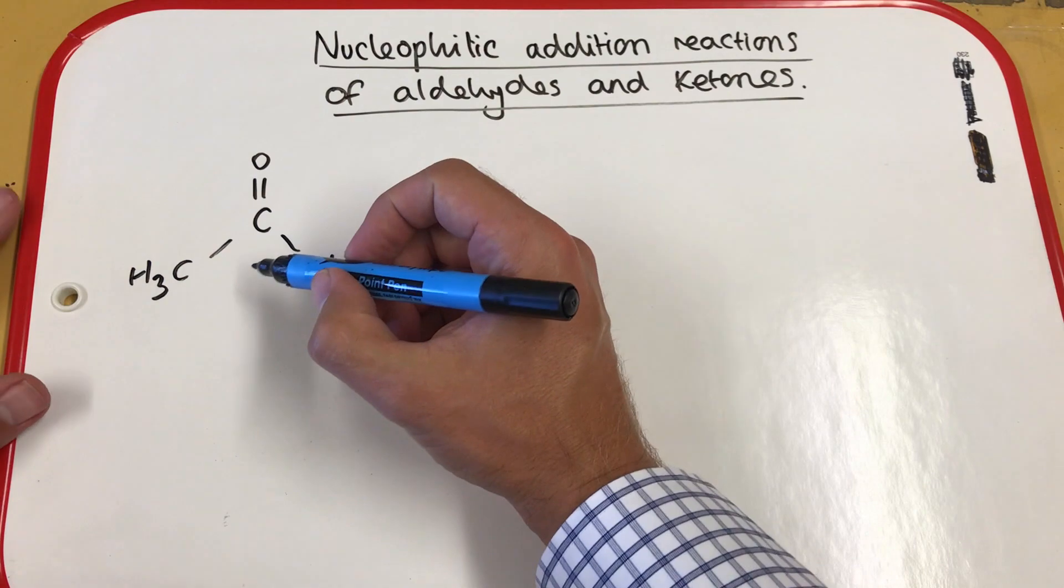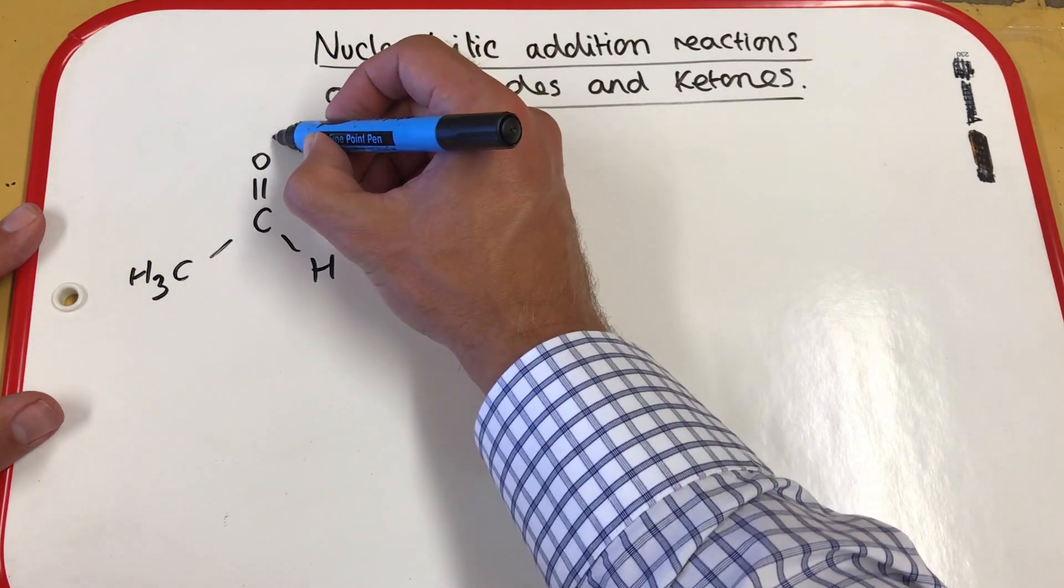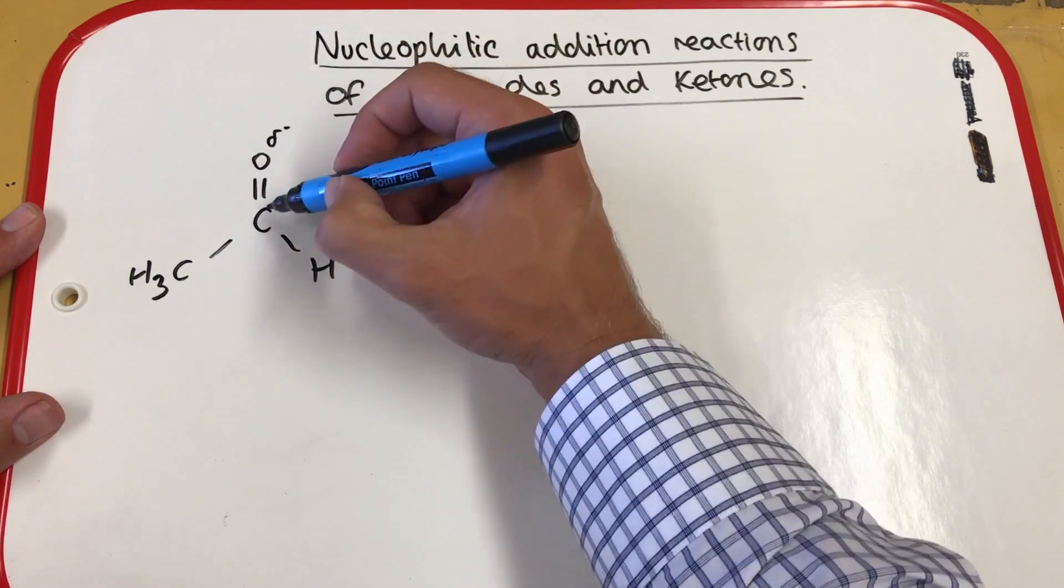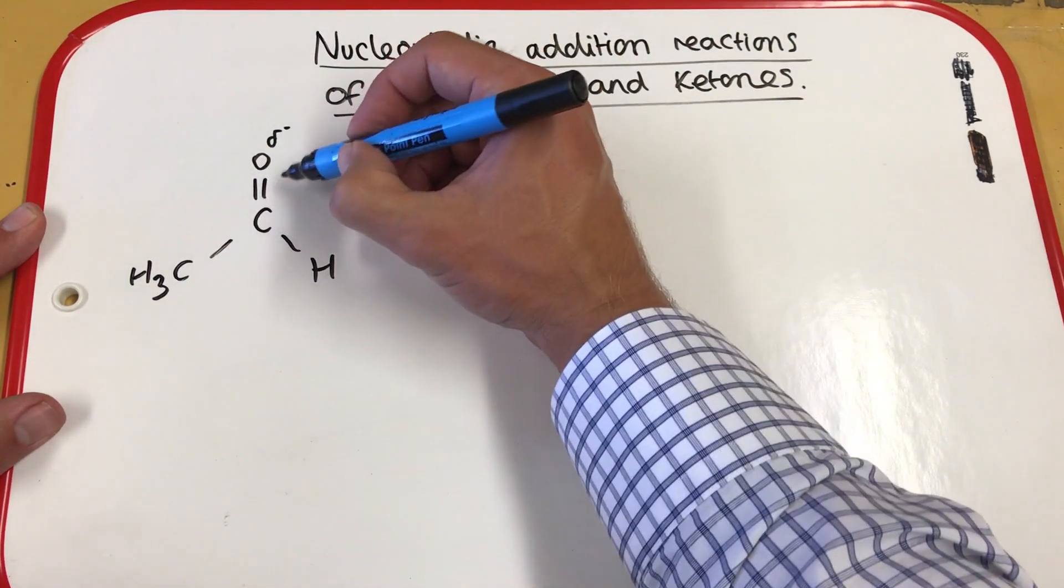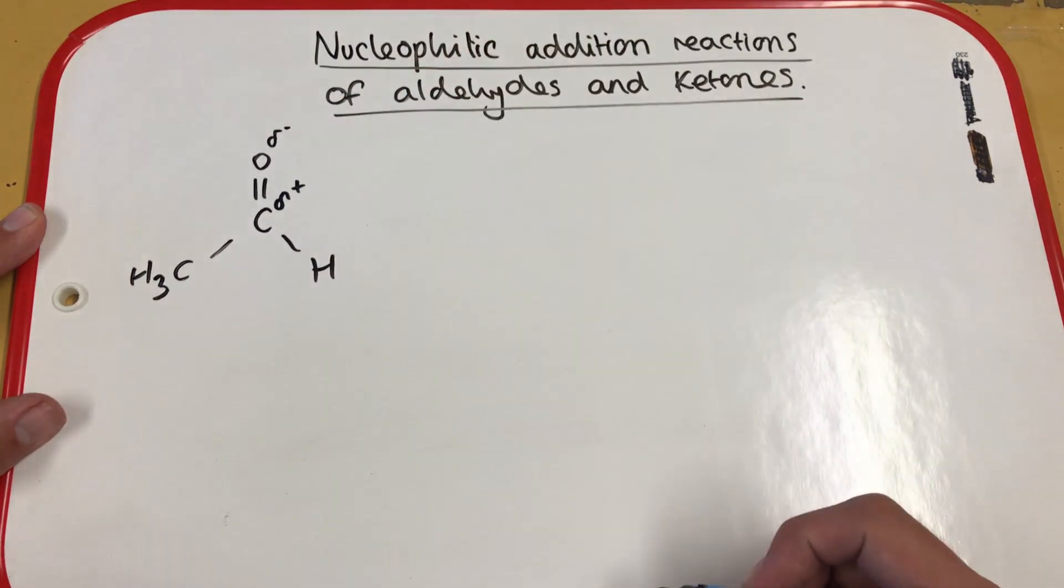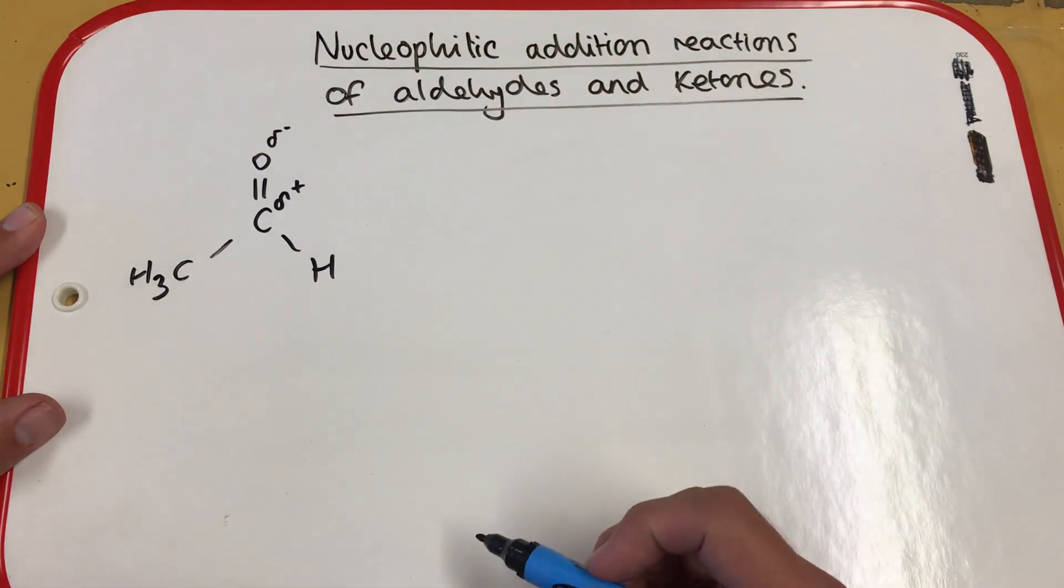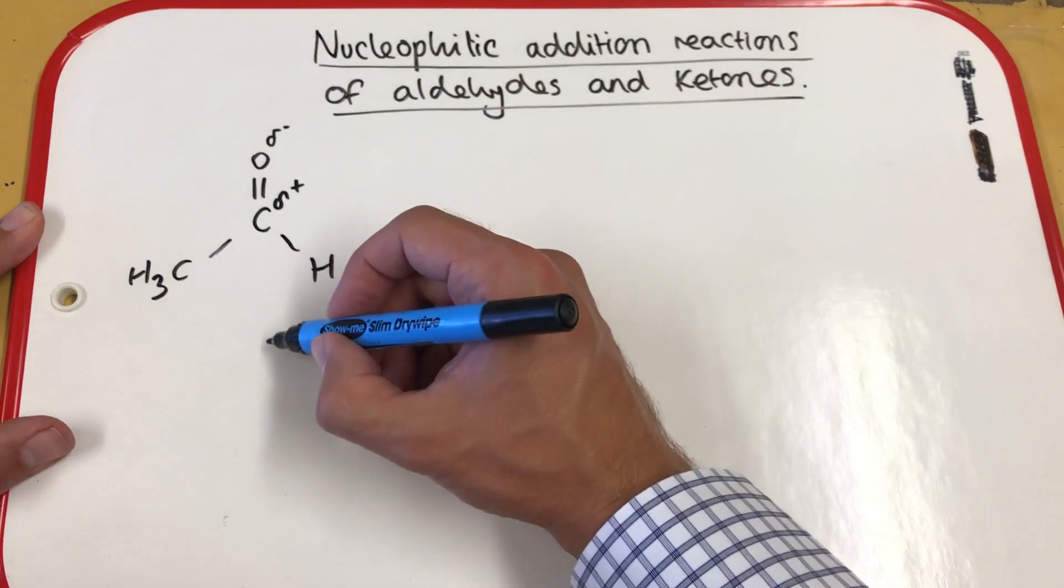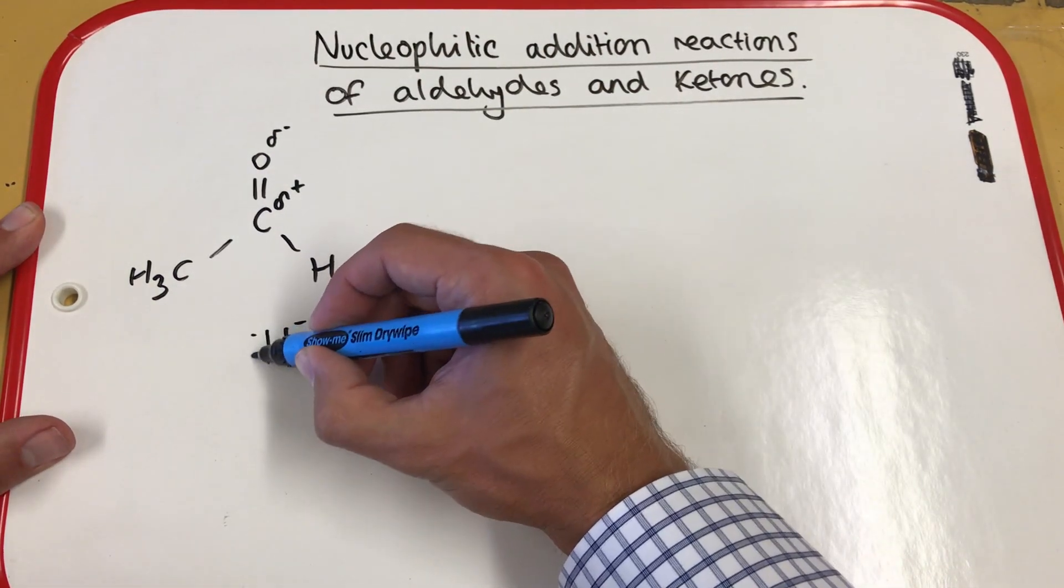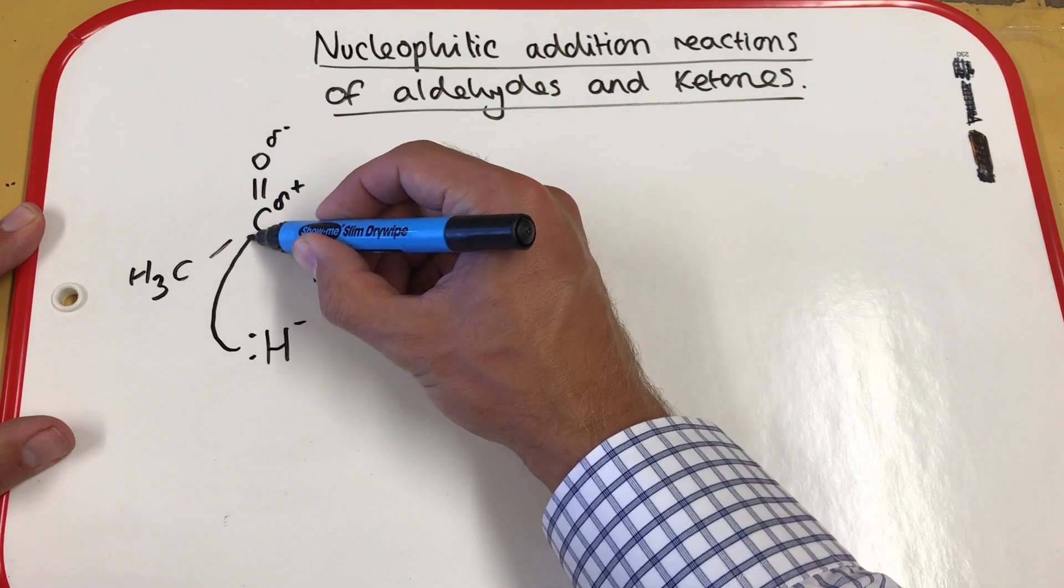If you look at the carbonyl group on the aldehyde, we will have a delta-negative oxygen because the oxygen is more electronegative than the carbon, so it draws the electrons towards the oxygen. And we have a delta-positive carbon here because the electrons are spending more time, they're pushed towards the oxygen more. Now, our hydride ion, our nucleophile, has the pair of electrons here, which it's going to donate to the carbon.